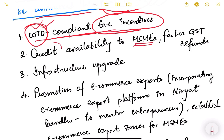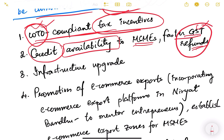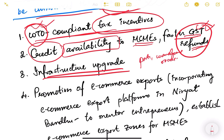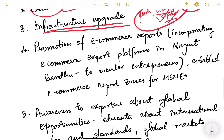The second expectation is that MSMEs should be given a lot of credit availability so that they can fight global pressures. GST refunds should be fast for them because they are always very short on cash, so they should get faster GST refunds. Infrastructure upgrades are also needed — ports, warehouses, electricity connections, roads, railways — everything needs to be upgraded.